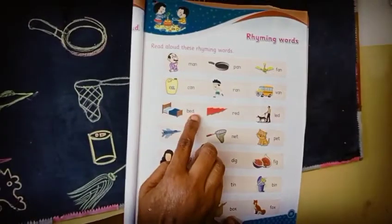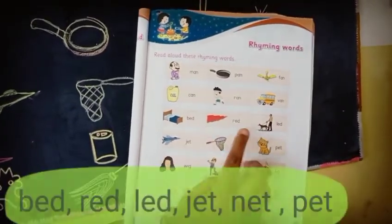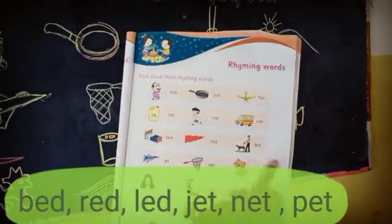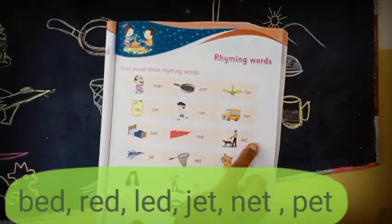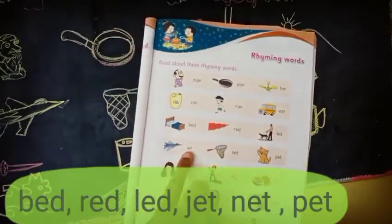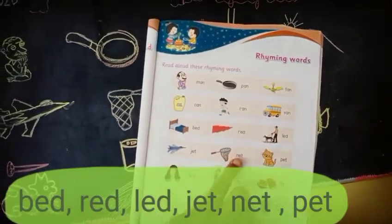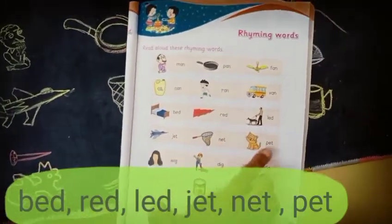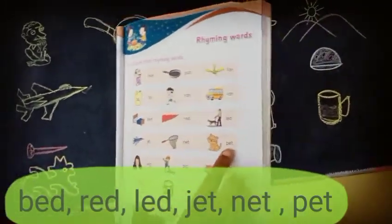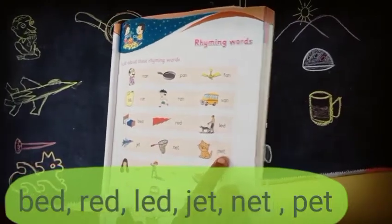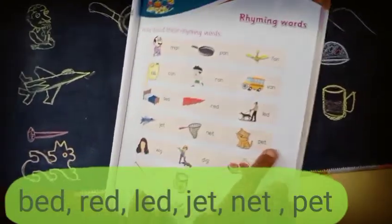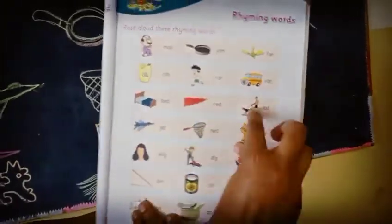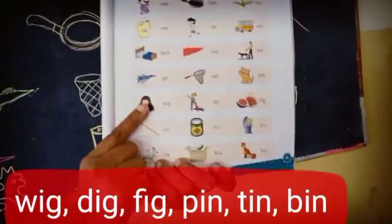The next: B-E-D, bed. R-E-D, red. L-E-D, led. J-E-T, jet. N-E-T, net. P-E-T, pet. This is the E sound.